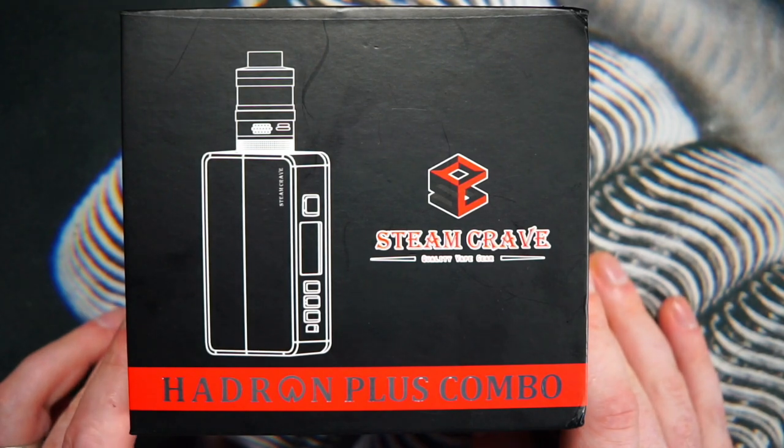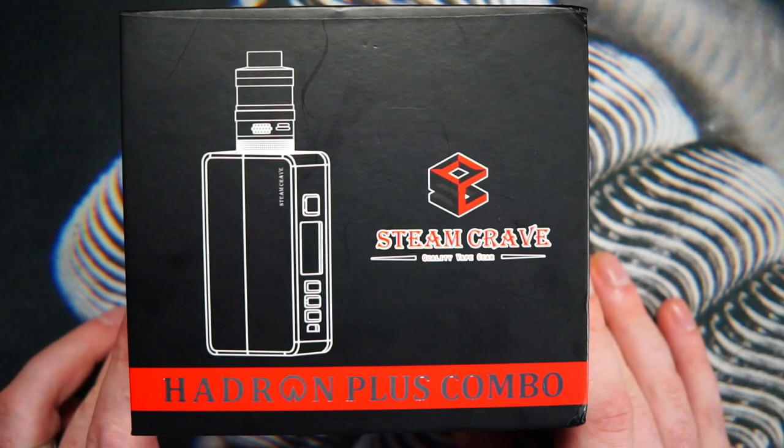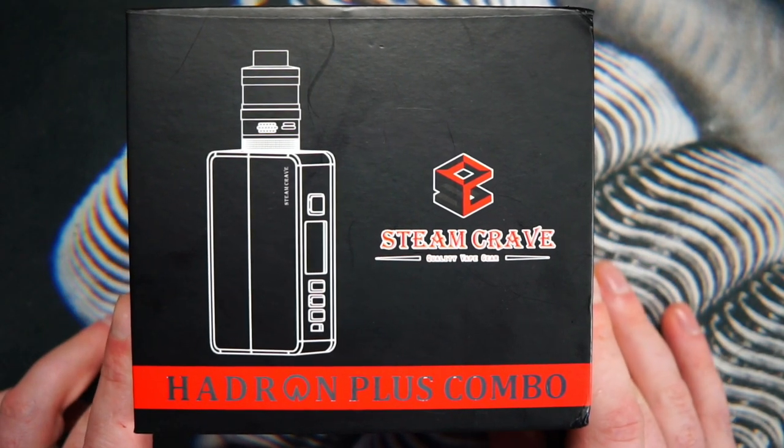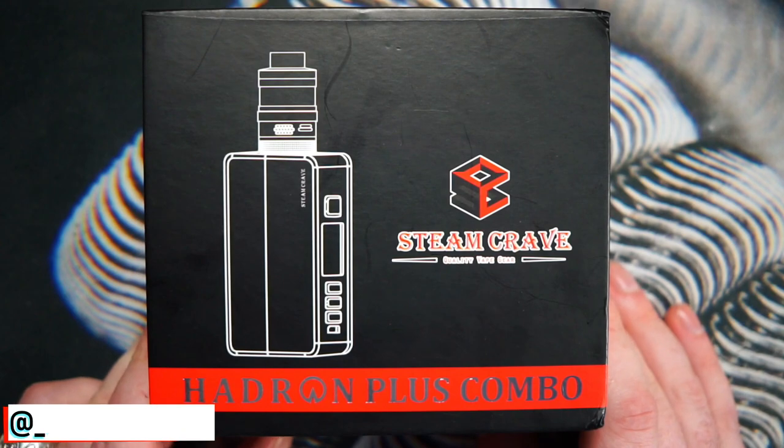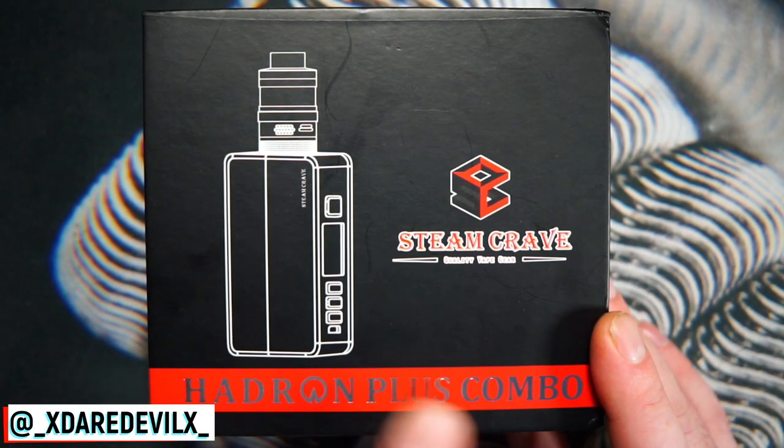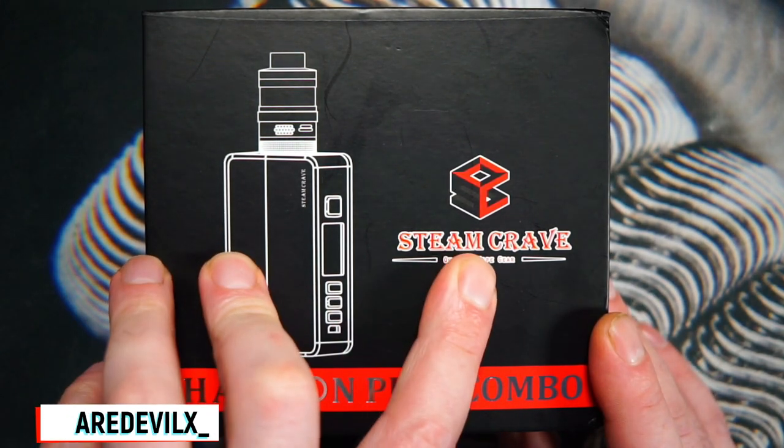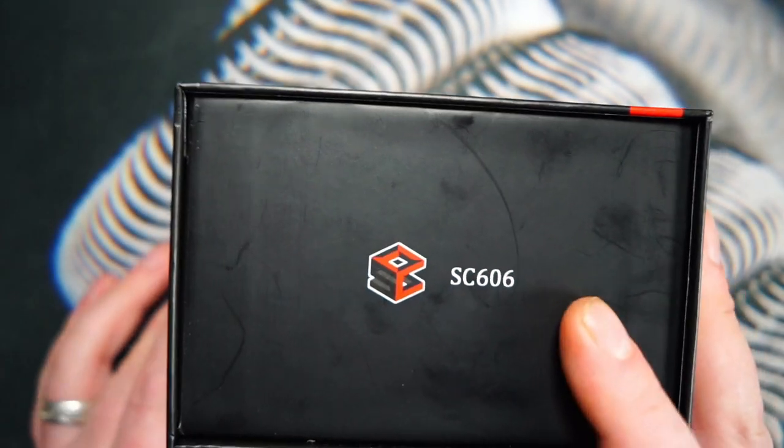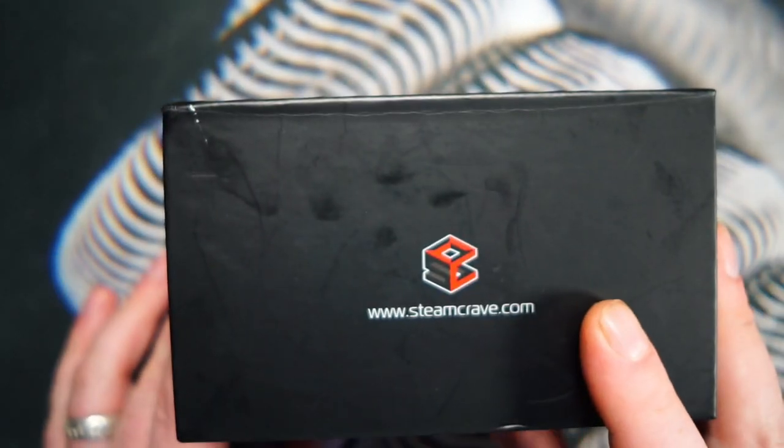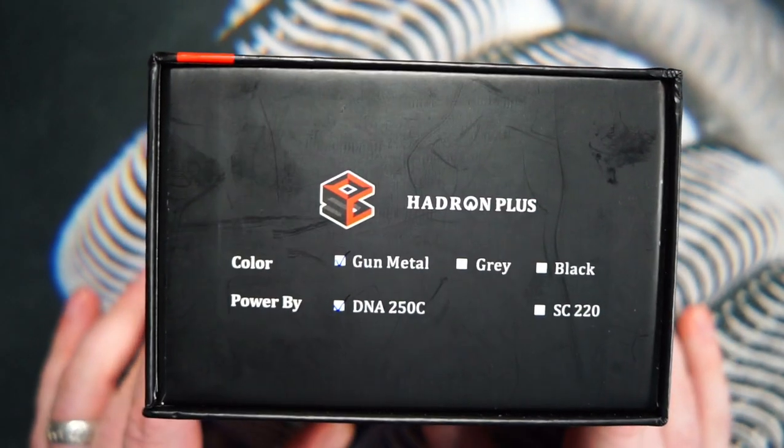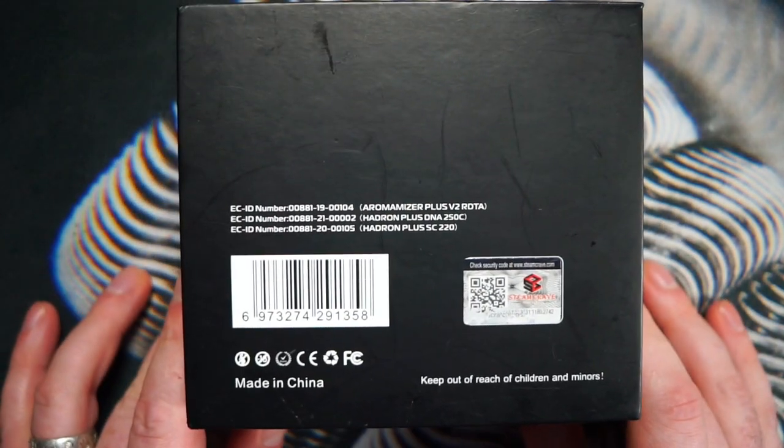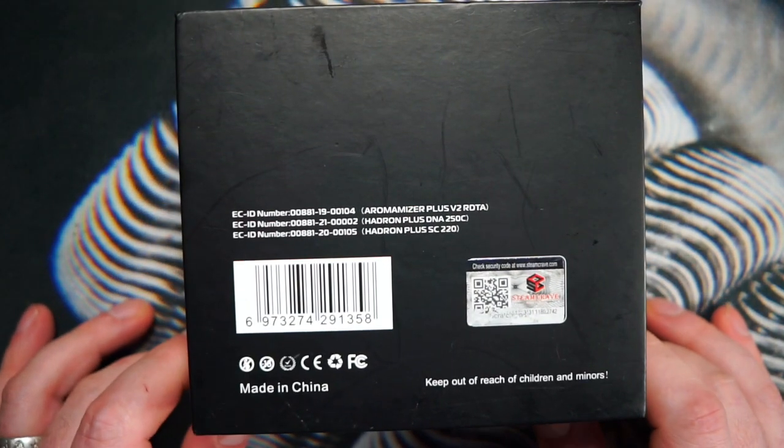So here we have the Hadron Plus Combo Kit from Steam Crave. This was sent out for review by Daredevil over on Instagram, so I'll stick his Instagram tag here on the bottom. Make sure you go over and give him a follow. On the box here, Hadron Plus Combo, you have an image of the kit and Steam Crave. On the side here, their logo, this side, their website. This side tells you which color this comes in, so this is the gunmetal version. And on the back here, you just have your usual barcodes and serial numbers.